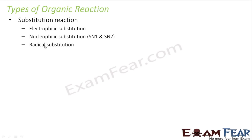There are various types of organic reaction. The first one is substitution reaction. In substitution reaction, we have electrophilic substitution and nucleophilic substitution — in nucleophilic we have SN1 and SN2. We will study SN1 and SN2 only. We also have free radical substitution reaction.